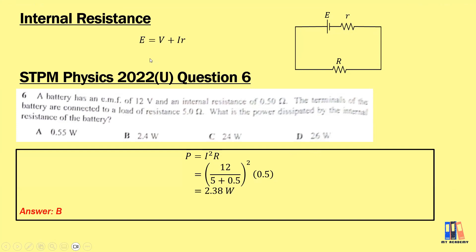The basic formula is E equal to V plus Ir, where V is the voltage across the resistance, also equal to IR. The other IR here — R refers to the internal resistance of the EMF source, such as the battery.